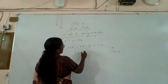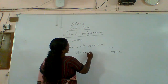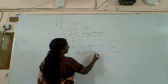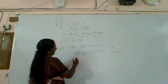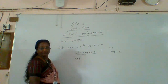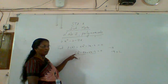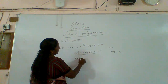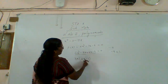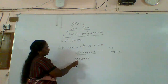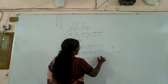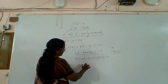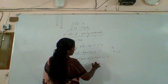So six x square minus nine x plus two x minus three equal to zero. From the first two terms, three x is common: three x into two x minus three. From the last two terms, plus one into two x minus three equal to zero. So two x minus three into three x plus one equal to zero.